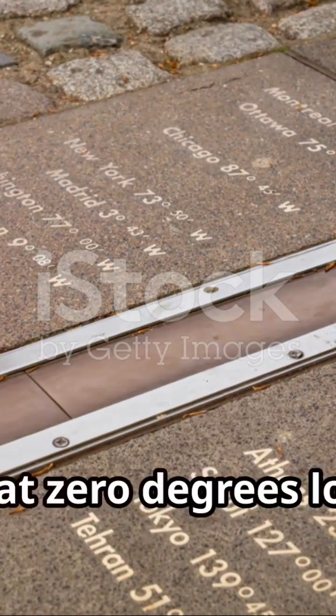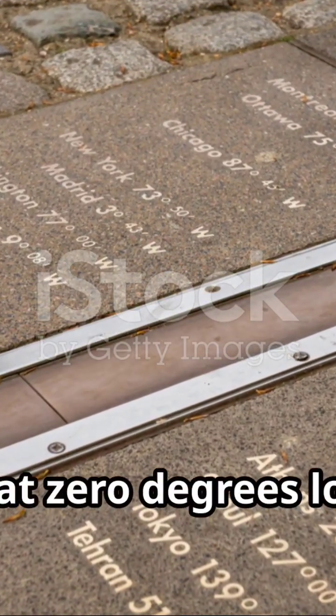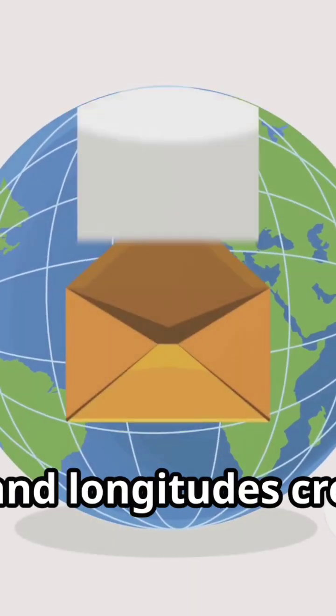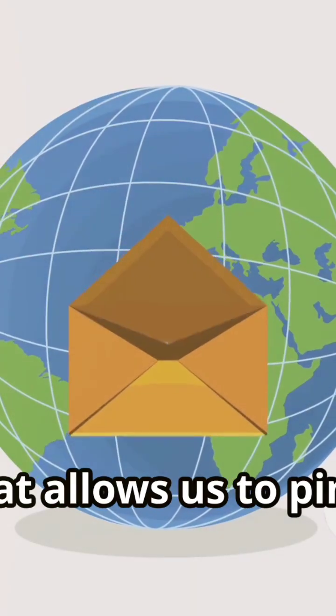The prime meridian, which is at 0 degrees longitude, runs through Greenwich, England. Together, latitudes and longitudes create a grid system that allows us to pinpoint any location on Earth.